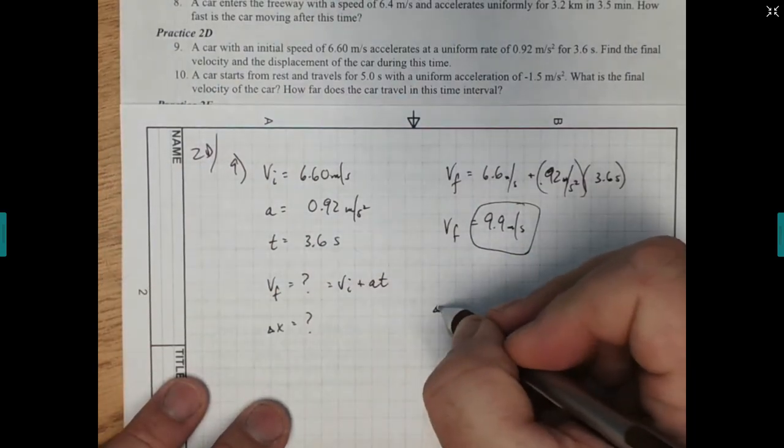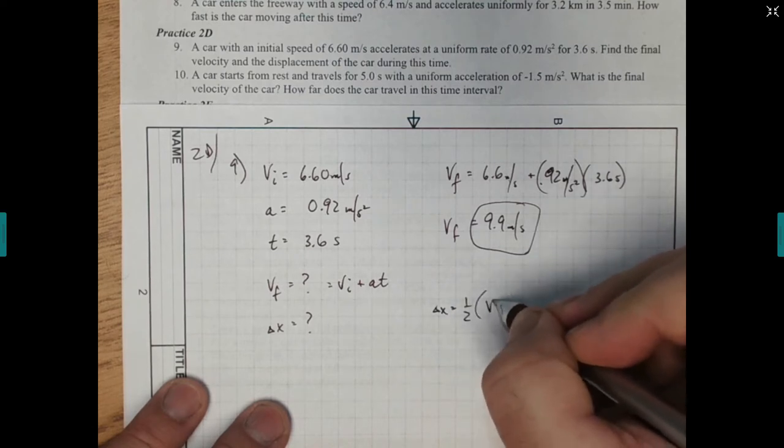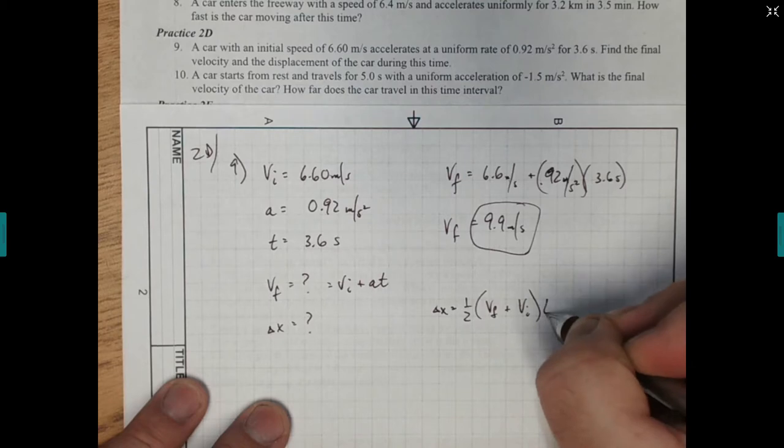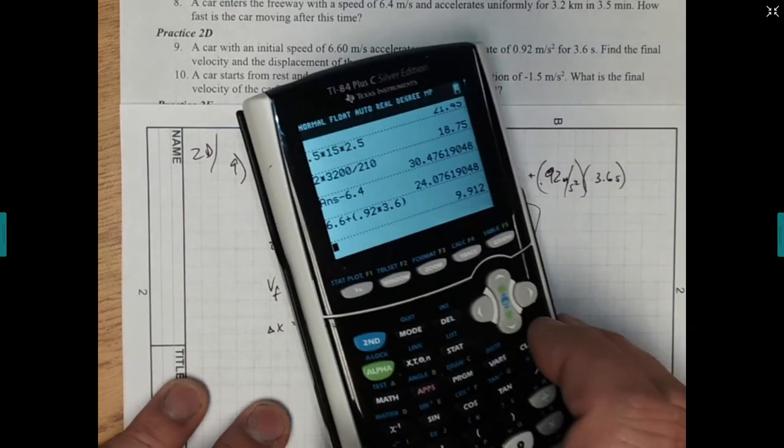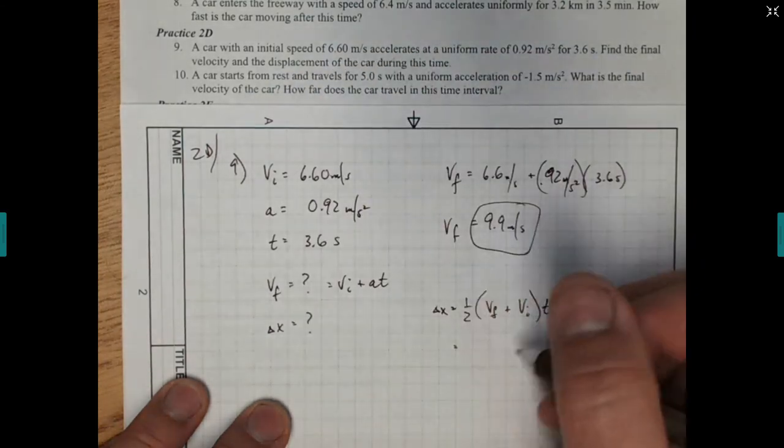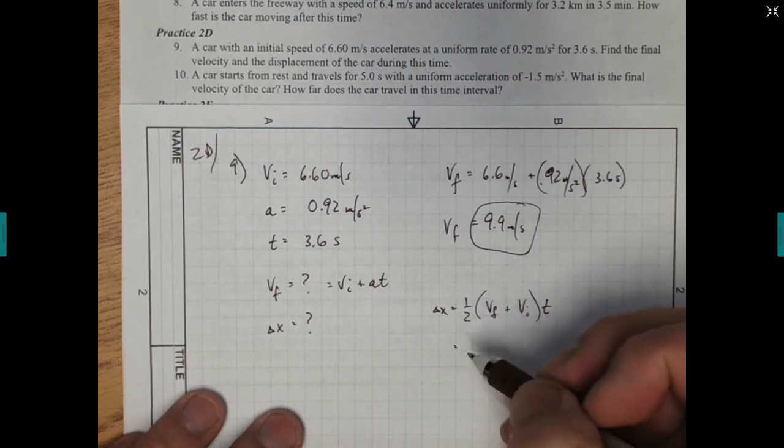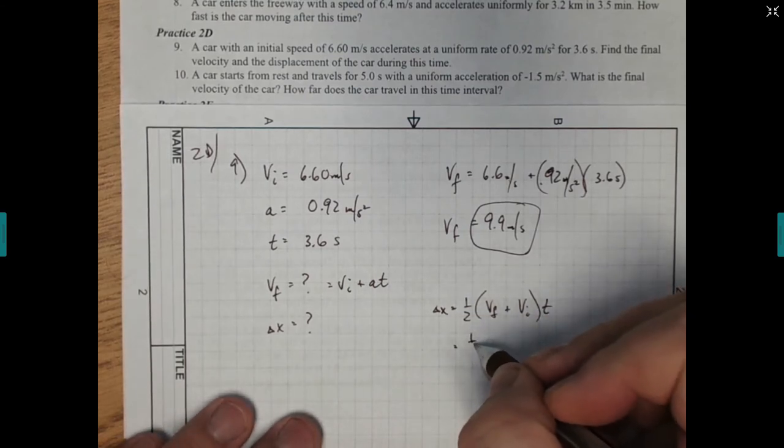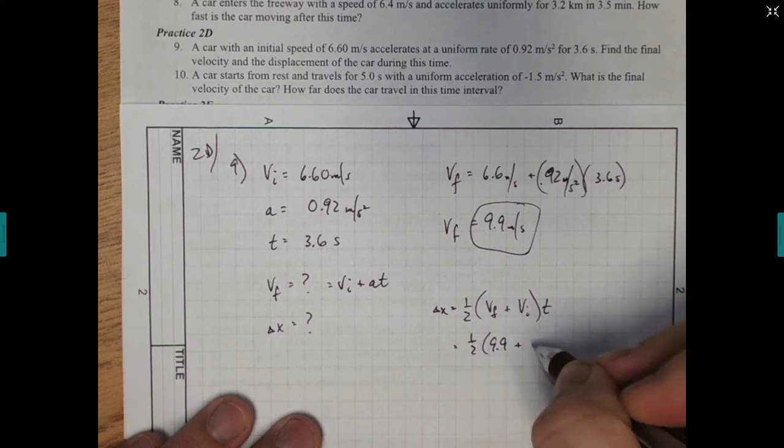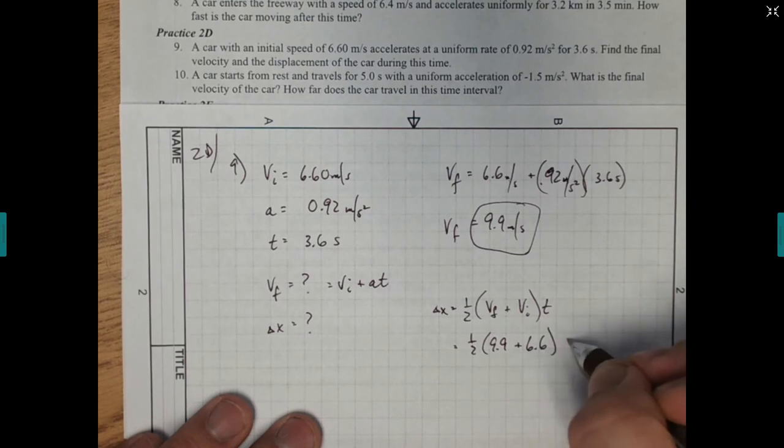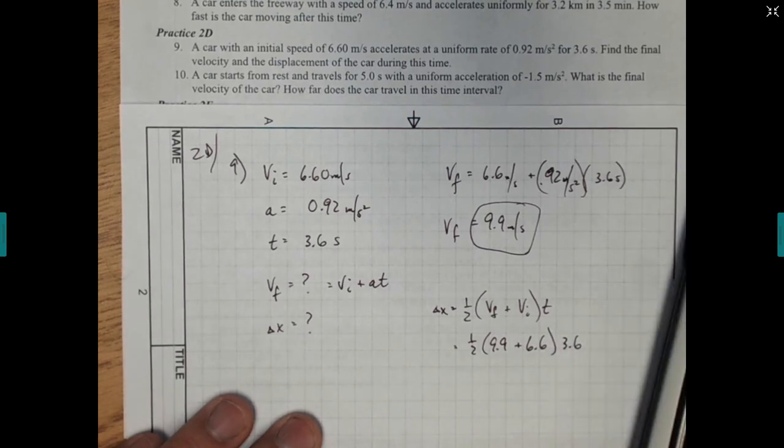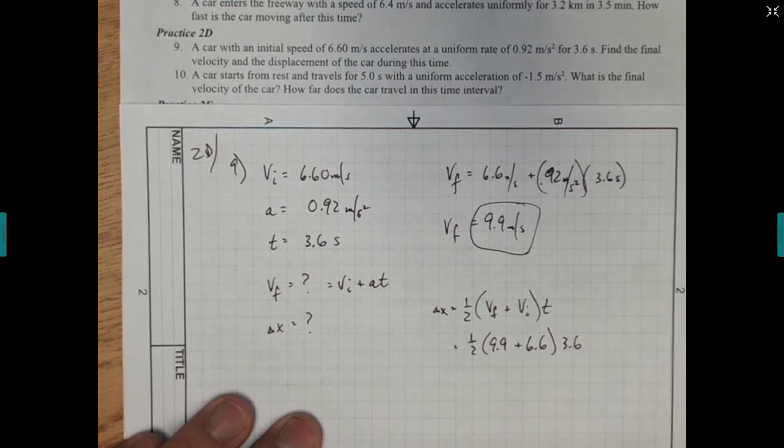So first we're going to say that delta x is equal to the 1 half times vf plus vi times t. And now we're going to put those in there. Remember, we rounded this off a little bit with 9.912. So because we're rounding things off, our answers for both of these might not be exact. But they should be pretty darn close. So we're going to 9.9. I'm going to leave off the units just so we can see the numbers a little better. Initial velocity is 6.6. And my time was 3.6. So we're going to do 9.9 plus 6.6. We're going to divide that by 2. And then we're going to multiply it by 3.6. And we get 29.7.